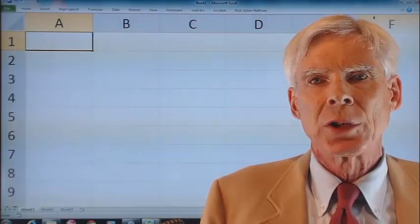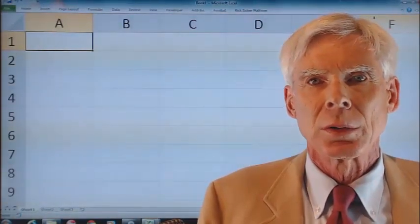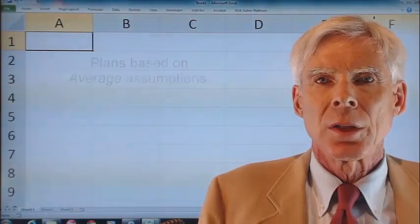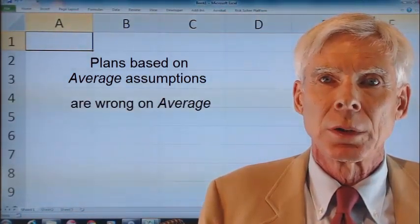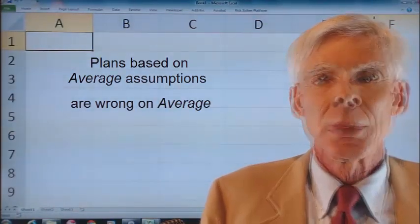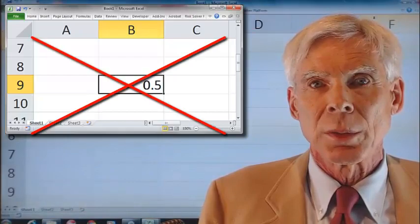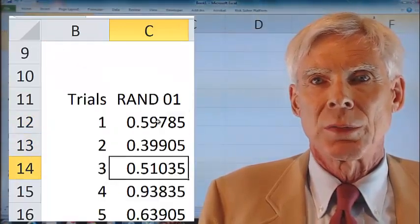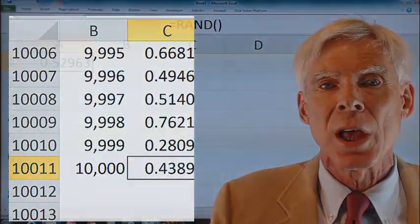The flaw of averages occurs when uncertainties are approximated by single average values. It states that plans based on average assumptions are wrong on average. SIP math helps cure the flaw of averages by replacing single numbers with arrays of thousands of numbers. This is known as a stochastic information packet, or a SIP.